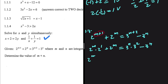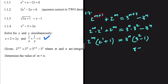Taking 2 to the power m as a common factor on the left gives 2 to the power m times (2 plus 1), which is 2 to the power m times 3. On the right, taking 3 to the power n as a common factor gives 3 to the power n times (9 minus 1), which equals 3 to the power n times 8. Since 8 equals 2 to the power 3, the equation becomes 2 to the power m times 3 equals 3 to the power n times 2 to the power 3.